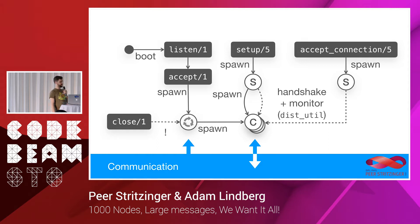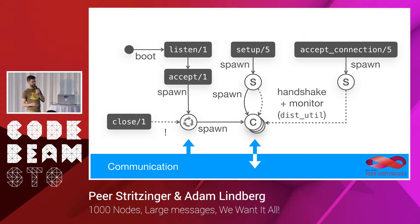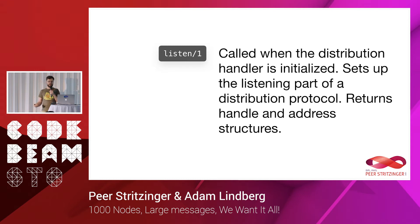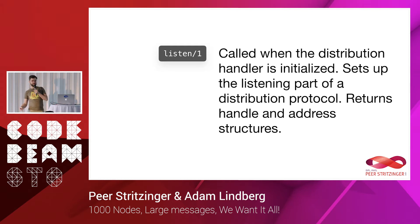The first callback called when you start your system is the listen callback. The blue layer at the bottom represents the network or other nodes you communicate with. The listen callback is called when the distribution handler — your module — is initialized, and it sets up the listening part of your distribution protocol. As an example, there's a module called gen_tcp_dist, which implements Erlang distribution in Erlang using gen_tcp. This callback should return a handle to whatever instance you create and some related address structures.